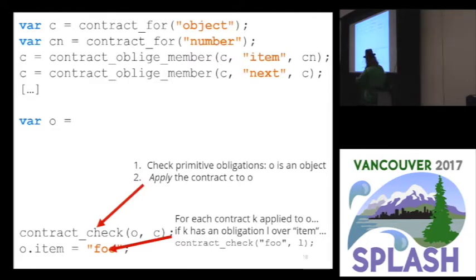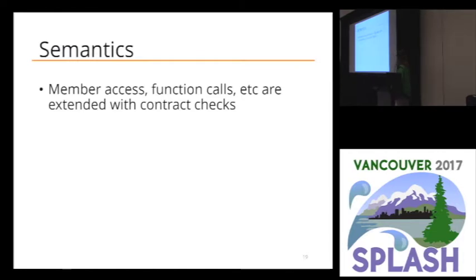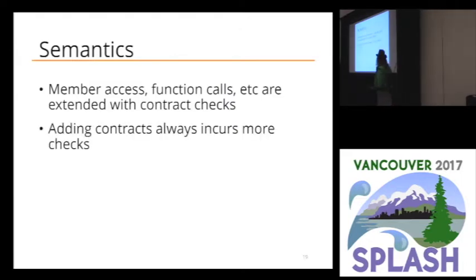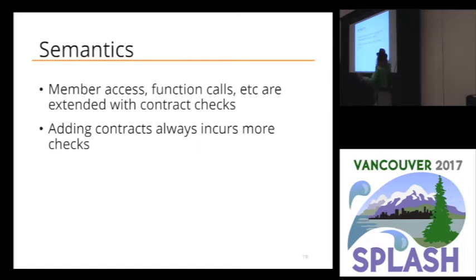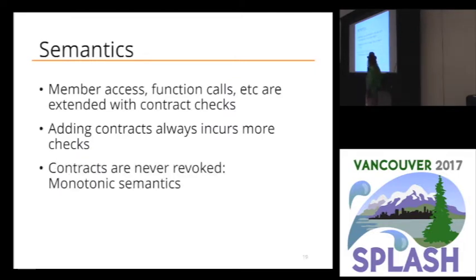Since we checked the primitive obligation, if we actually try to write something invalid, this will throw the error that gives us the types we want. They're nice structural types. This involves extending the virtual machine for memory access, function calls, etc. to do these contract checks. When you add contracts that always incurs more checks — we are only moving towards a more checked domain. Contracts are never revoked, so when you put a contract on an object, it gets more precise.